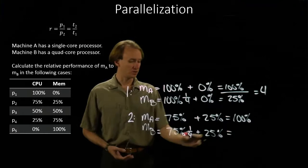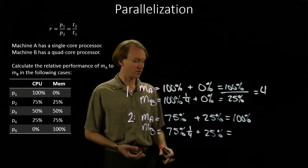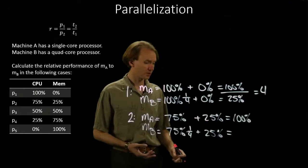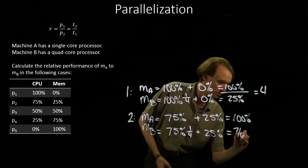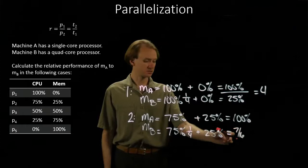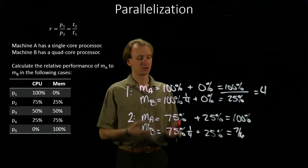But now I get a different result. Here I have three-fourths times one-fourth, which will give me three-sixteenths, and one-fourth, or four-sixteenths. So this will give me seven-sixteenths. So it takes Machine B a little less than half as much time to run this task than it took Machine A.